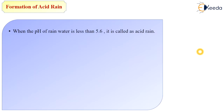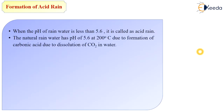When the pH of rainwater is less than 5.6, it is called acid rain. Natural rainwater has a pH of 5.6 at 25 degrees centigrade due to the formation of carbonic acid from the dissolution of carbon dioxide in water. The reaction takes place when carbon dioxide reacts with water, converting it into carbonic acid.